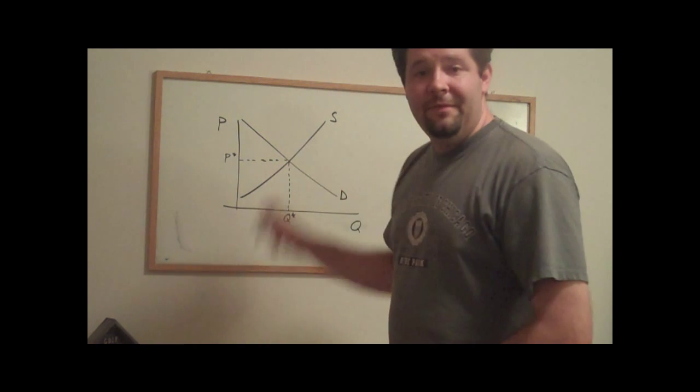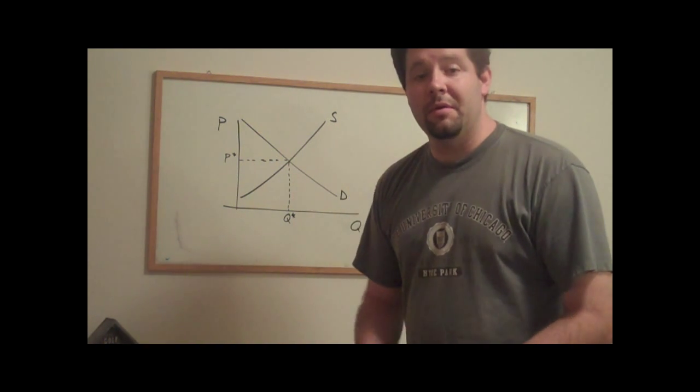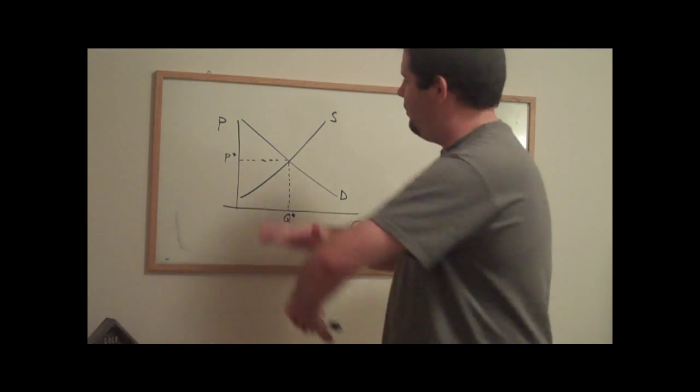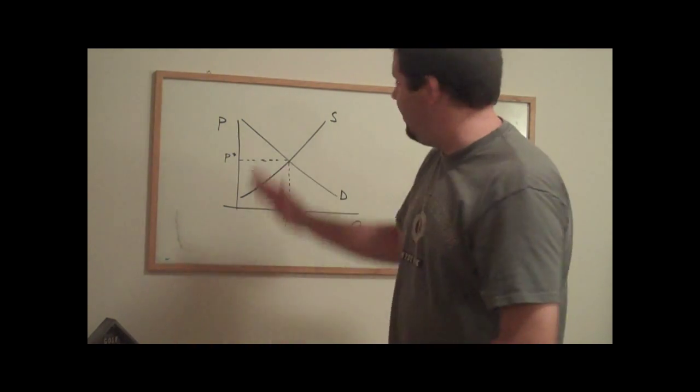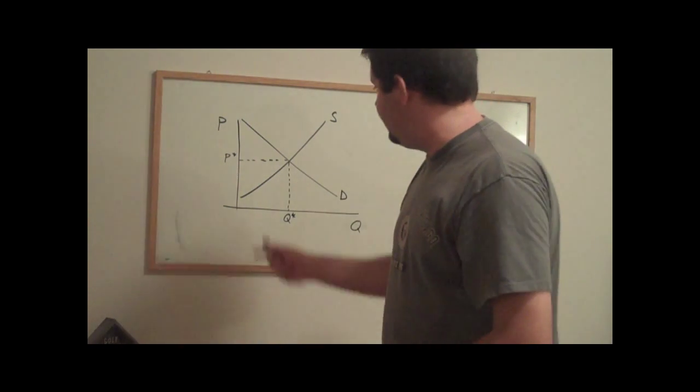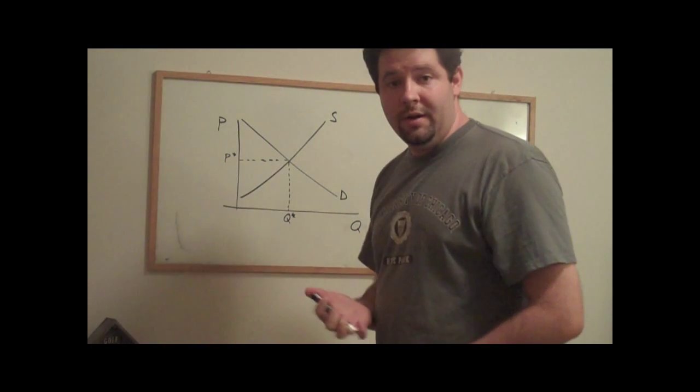They actually conflict with what our equilibrium of supply and demand is going to tell us. With just supply and demand, we look at the intersection between those two and that will tell us the equilibrium price and quantity.